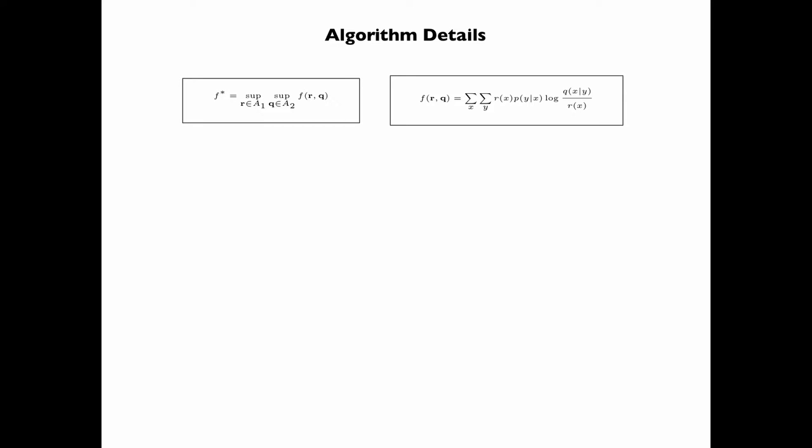We now fill in the algorithm details. By Lemma 9.1, for any given R in A1, the unique Q in A2 that maximizes F is given by Q(x given y) as displayed, which is the reverse transition matrix that corresponds to R as the input distribution and P as the forward transition matrix.